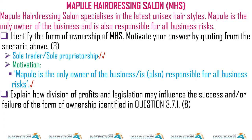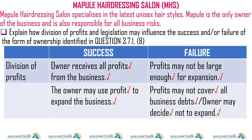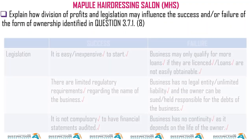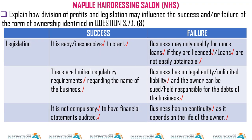Explain how division of profit and legislation may influence the success and failure of the form of ownership identified. For a sole trader — division of profits, success: the owner receives all profits from the business. The owner may use profits to expand the business. Failure: profits may not be large enough for expansion, or profits may not cover all business debts. The owner may decide not to expand.